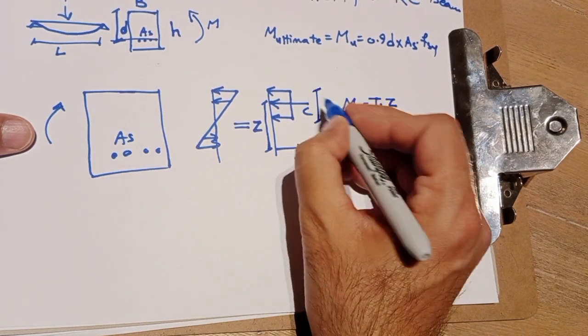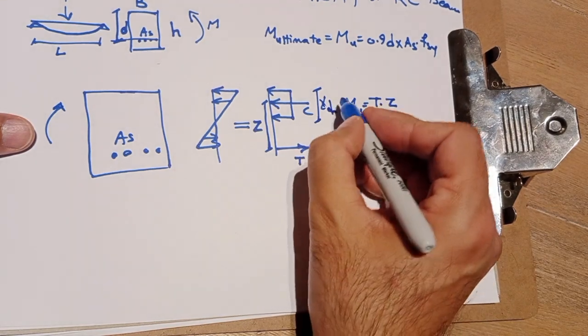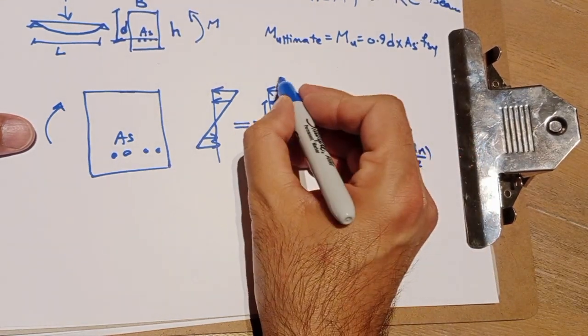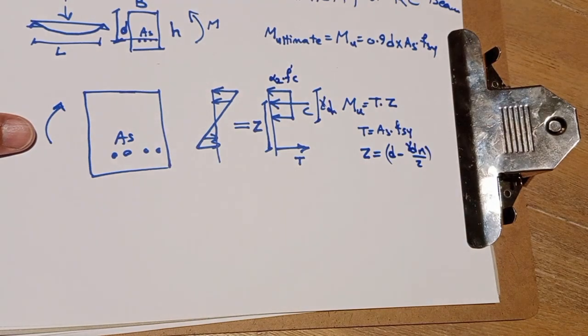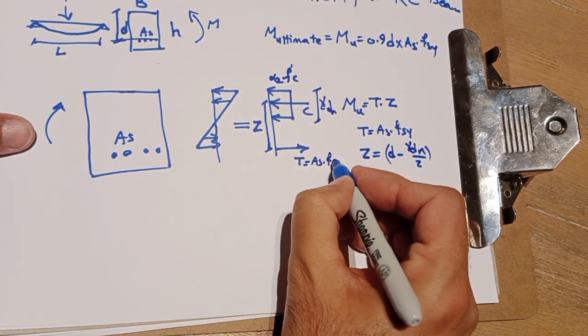Okay, gamma dn is the length of this compression. And alpha2 f'c is the width of compression force. And T is As times fsy.